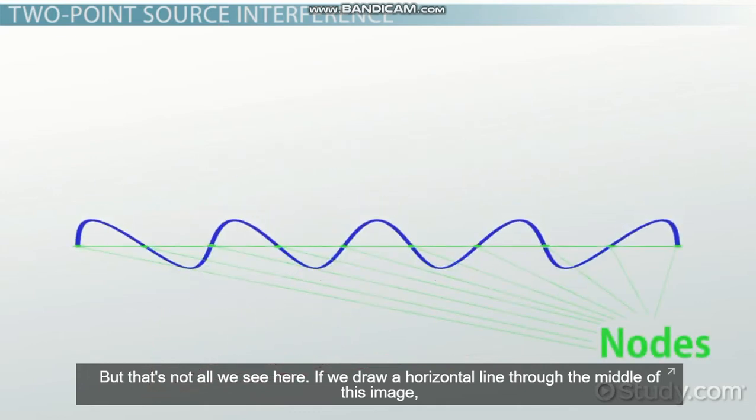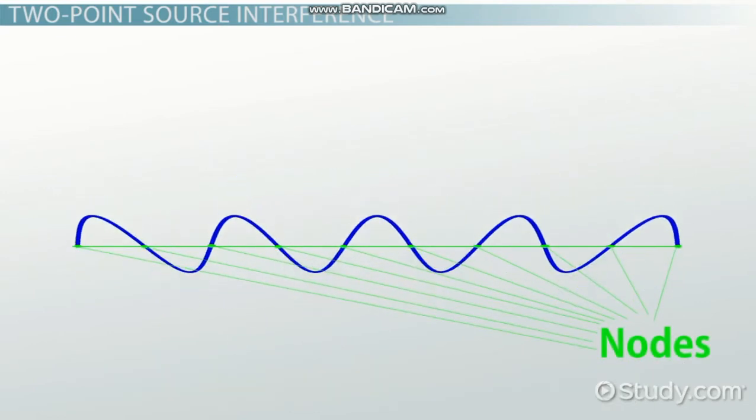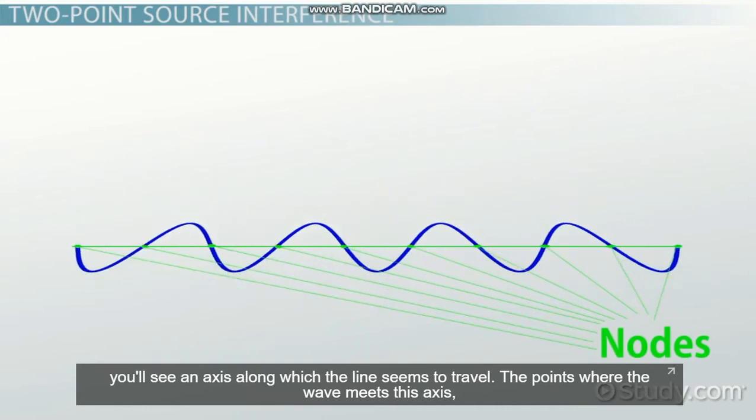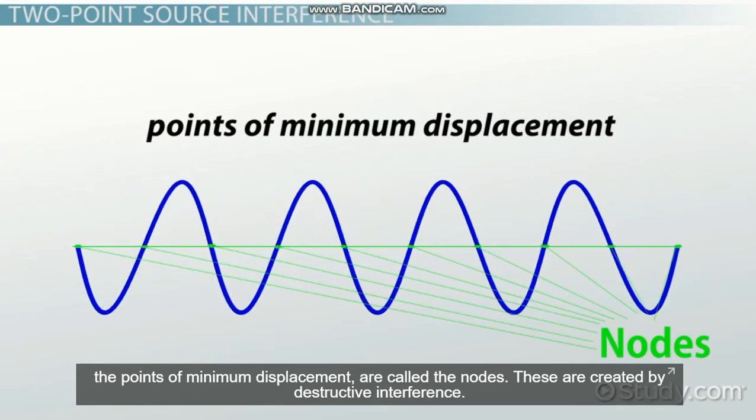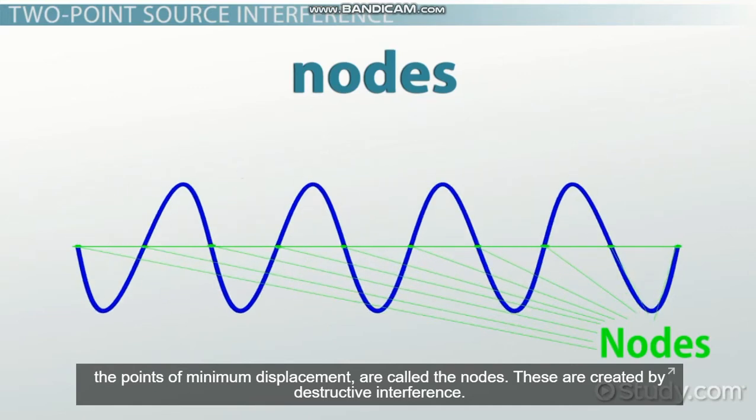If you draw a horizontal line through the middle of this image, you'll see an axis along which the line seems to travel. The points where the wave meets this axis—the points of minimum displacement—are called the nodes. These are created by destructive interference.